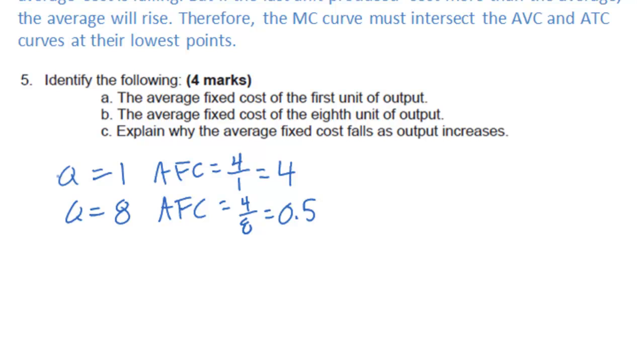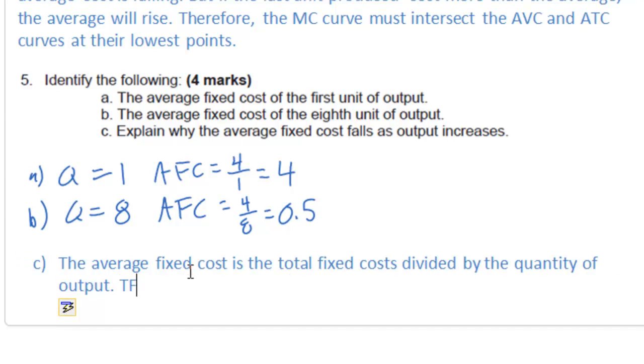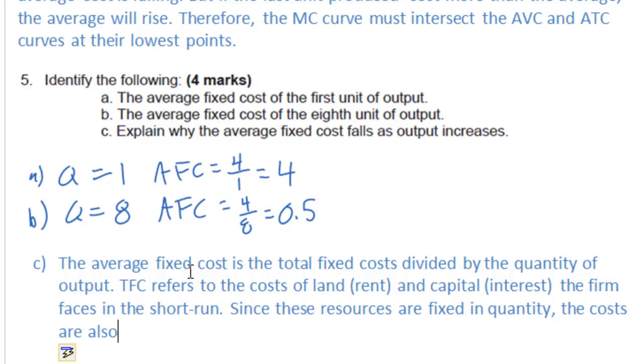Since a firm's total fixed costs are fixed, since they refer to the costs of fixed resources specifically capital and land, the average fixed cost only decreases as the output increases. Since we take the total fixed costs and divide it by a larger and larger number.